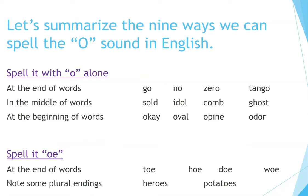Let's summarize the nine ways we can spell the O sound in English. Spell it with O alone: at the end of words — Go, Know, Zero, Tango; in the middle of words — Sold, Idle, Comb, Ghost; at the beginning of words — OK, Oval, Opine, Odor.